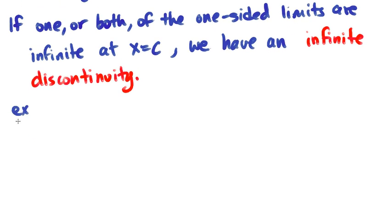For example, if you have a graph, and at some c value, you've got an asymptote.